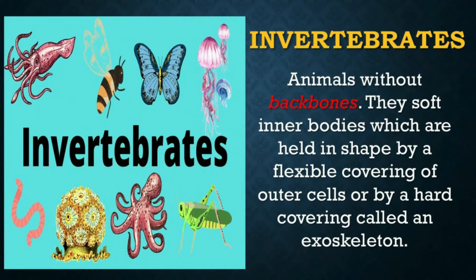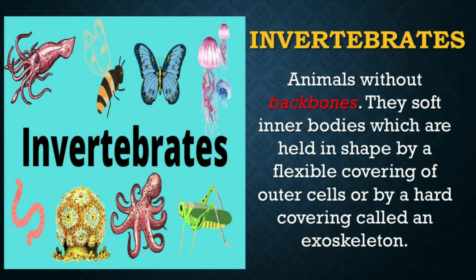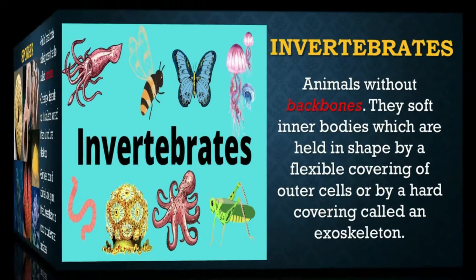Animals without backbones are called invertebrates. They have soft inner bodies which are held in shape by a flexible covering of outer cells or by a hard covering called an exoskeleton. However, the absence of a backbone does not hinder or affect their survival. In fact, invertebrates make up roughly 97% of all animals on Earth while vertebrates make up only 3%.